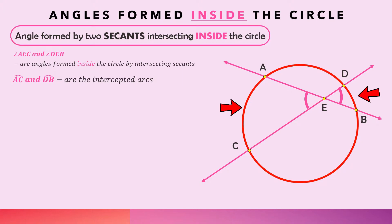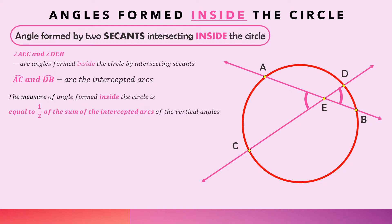Notice that these two angles are vertical angles. To find the measure of an angle formed inside the circle, it is equal to one half of the sum of its intercepted arcs — that is, the intercepted arcs of the vertical angle pair. So the measure of angle AEC equals one half of arc AC plus arc DB.